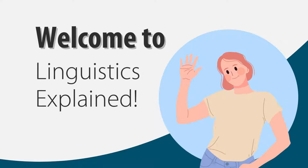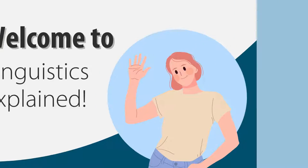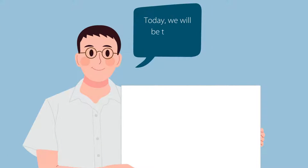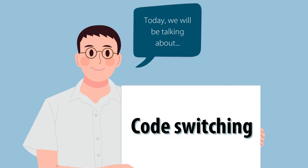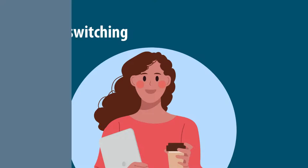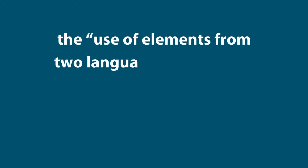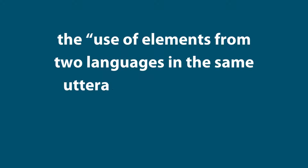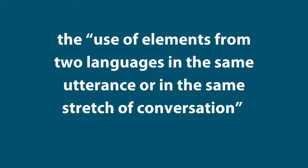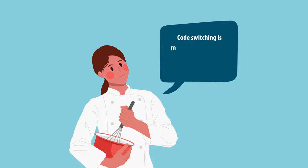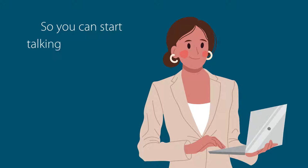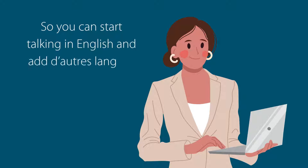Hello and welcome to Linguistics Explained. Today we will be talking about code switching. Code switching is a term that refers to the use of elements from two languages in the same utterance or in the same stretch of conversation. Code switching is mixing and matching but with words and different languages. So you can start talking in English and add d'autres langues dans le mix.